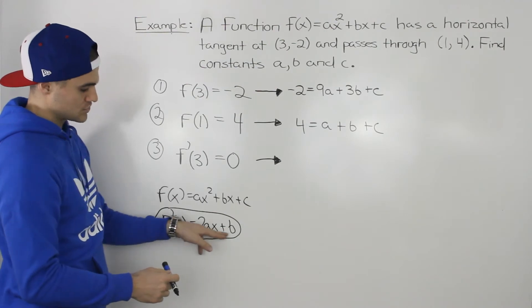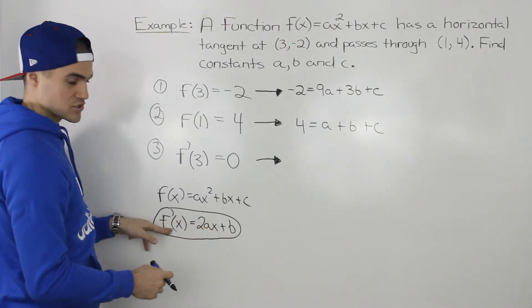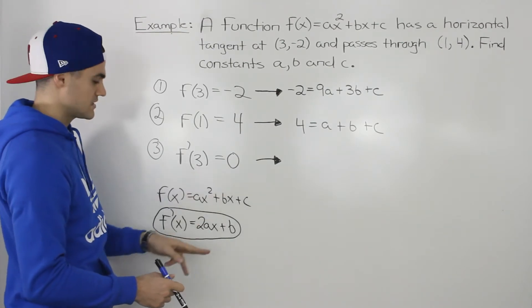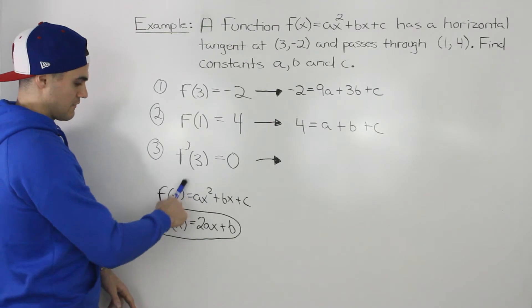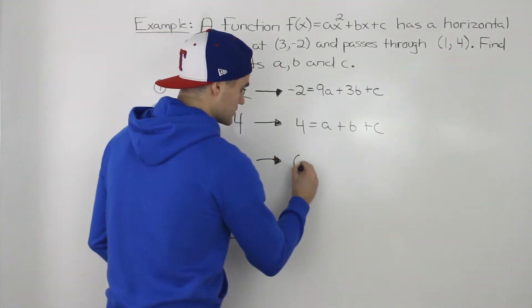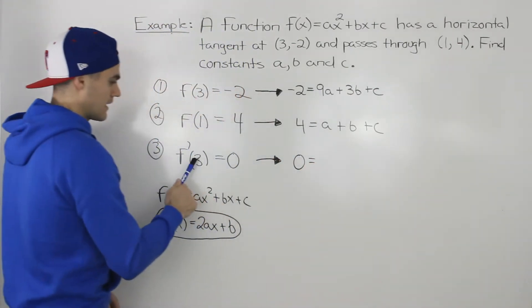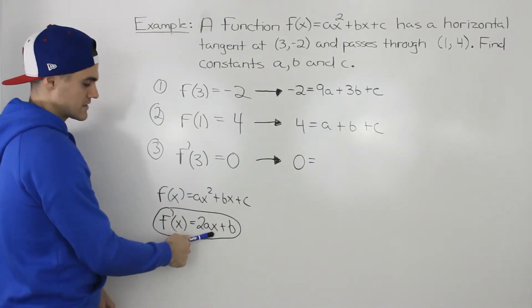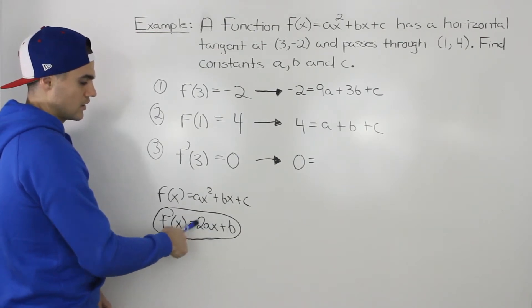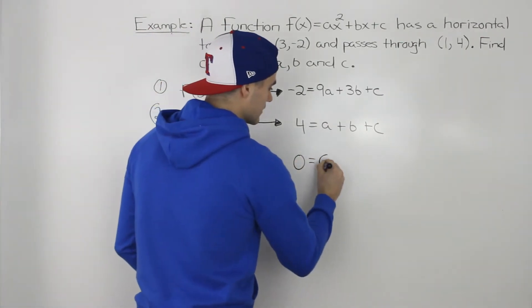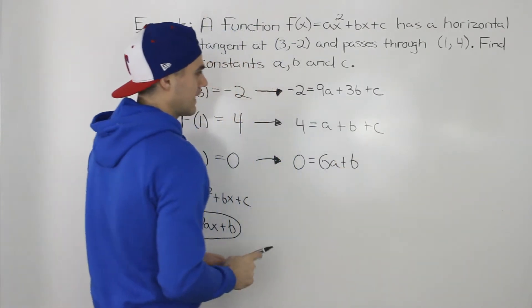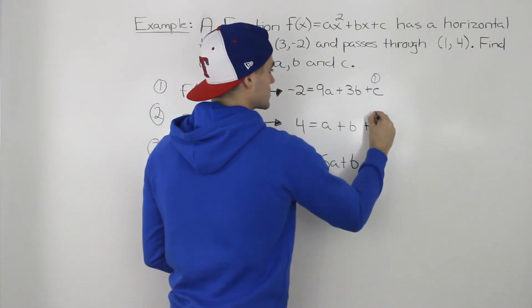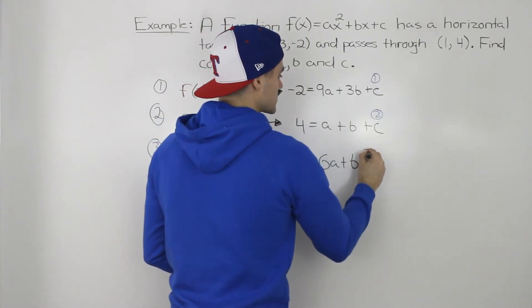Now we can use this expression for f prime of x to make an equation for f prime of 3 equaling 0. We keep 0 on the left side and plug in 3 for x on the right side, giving us 0 equals 6a plus b. And now we have three equations: equation 1 is negative 2 equals 9a plus 3b plus c, equation 2 is 4 equals a plus b plus c, and equation 3 is 0 equals 6a plus b.